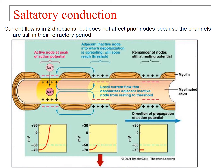The current flow actually goes in two directions — when sodium comes in at one node, it spreads both forward and backward. But it doesn't affect the prior node of Ranvier because that node is still in its refractory period. So when depolarization begins at a new node, the previous node is in its refractory period, keeping the signal moving in one direction down the axon.